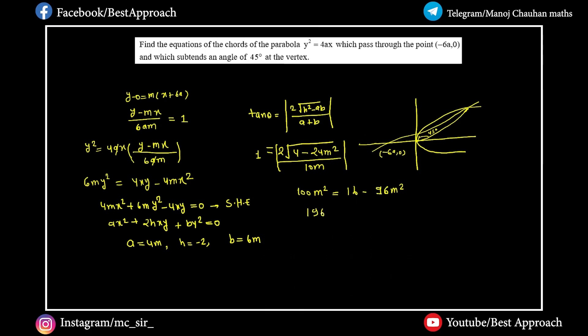This gives 196m²=16m², so m² equals 1/49, and m equals plus or minus 2/7. So we have the slope values.